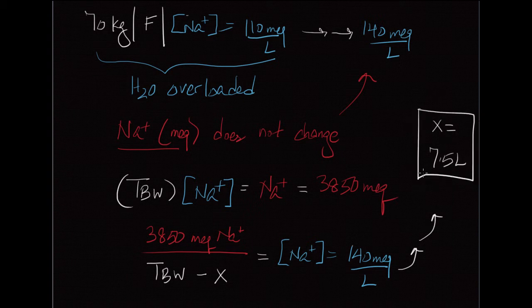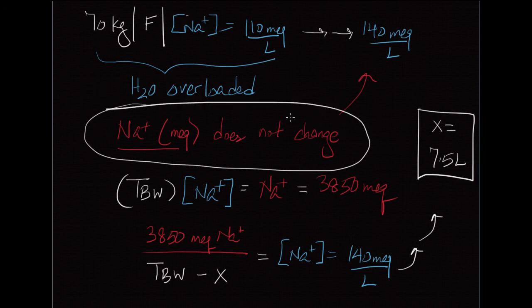So that's how much water, 7.5 liters, she will have to lose if you're going to go from a concentration of 110 to 140, keeping in mind that the total amount of sodium never changes. And that's the simple way to do a calculation on hyponatremia.